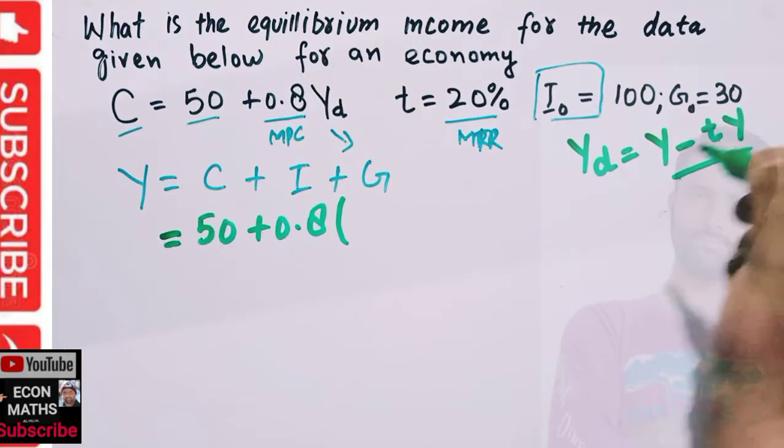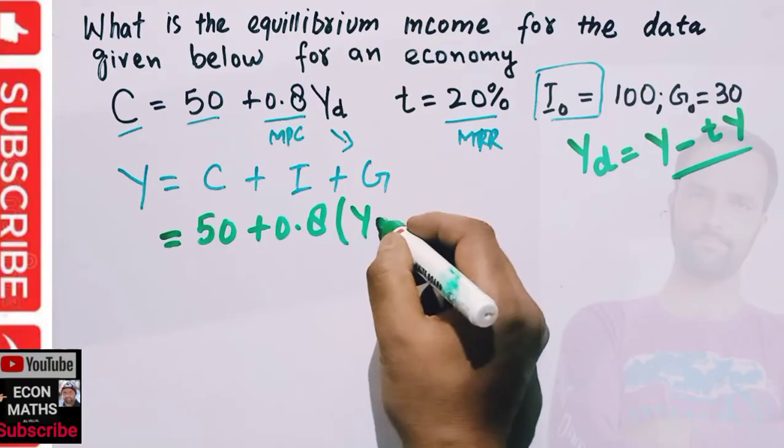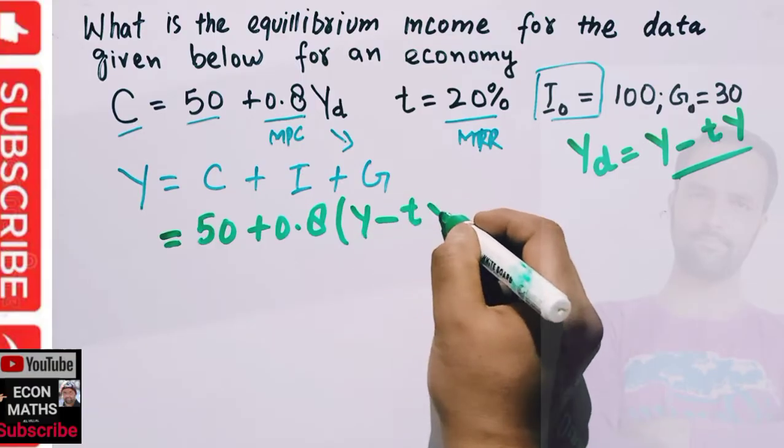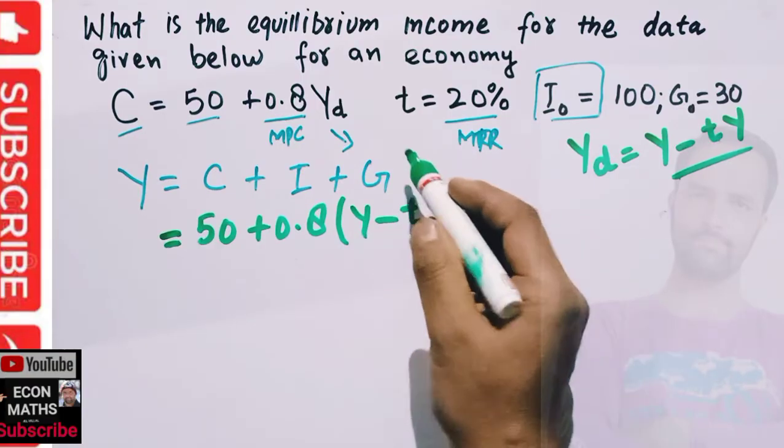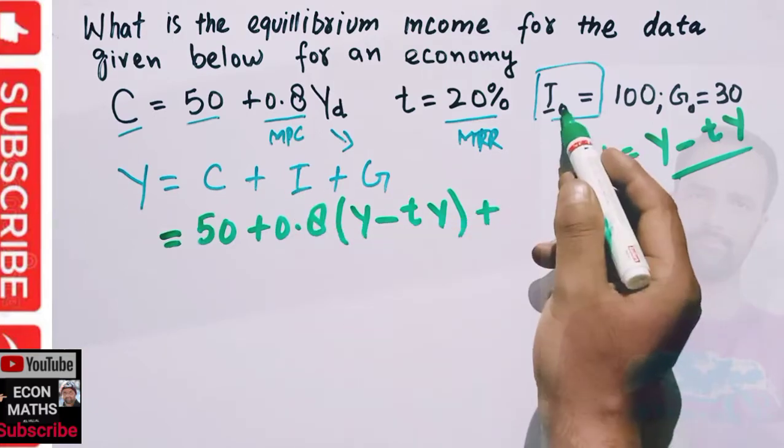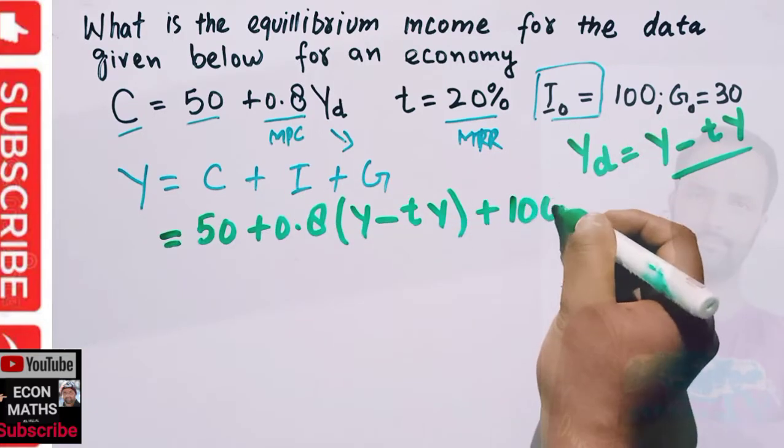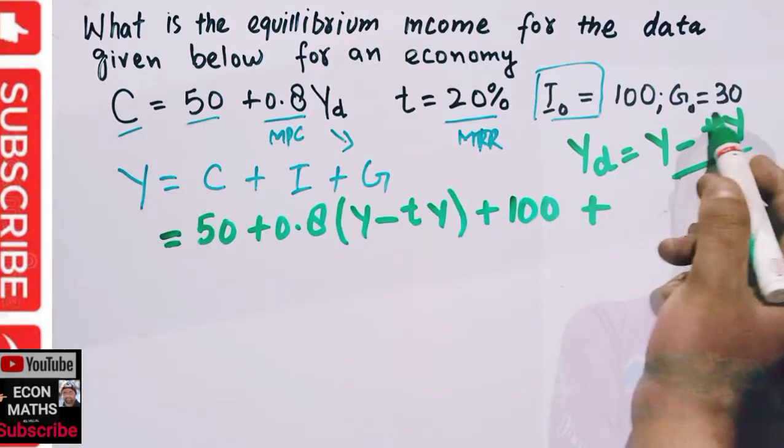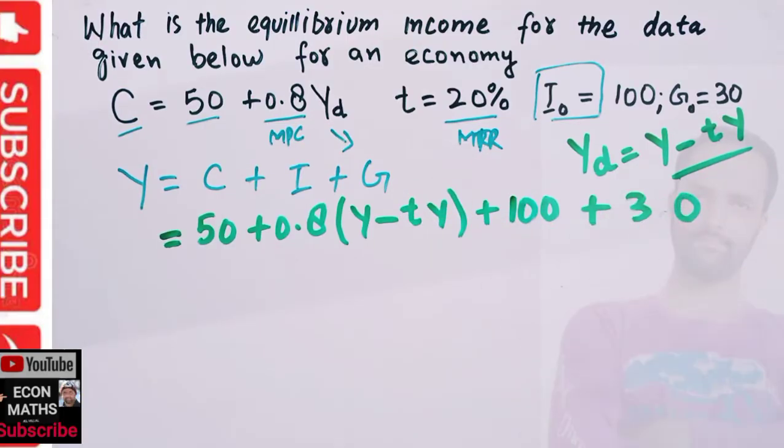Then we have investment of 100, so I write 100, plus government expenditure of 30. So our Y equals this: we have 50 + 100 + 30, which gives us 180.